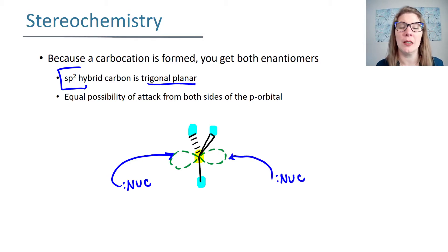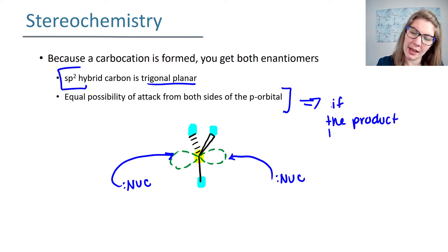With that empty p-orbital, your nucleophile is perfectly capable of adding from this side of the p-orbital, and it's also capable of adding from this side of the p-orbital. Because you get equal possibility of attack from both sides of the p-orbital, this means that if you have a chiral center at the end of your reaction, you're going to end up with both enantiomers. So if your final product is chiral, you're expecting a set of enantiomers, and that's really important because you are going to be expected to write stereochemistry on your exams. If the product has a chiral center, you're going to get both enantiomers.